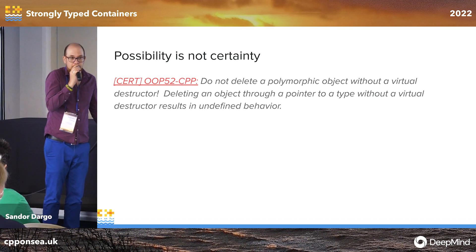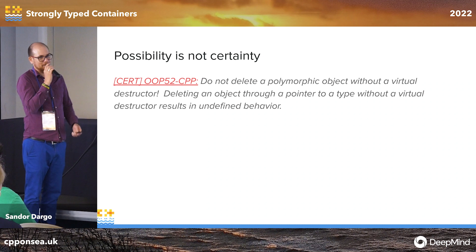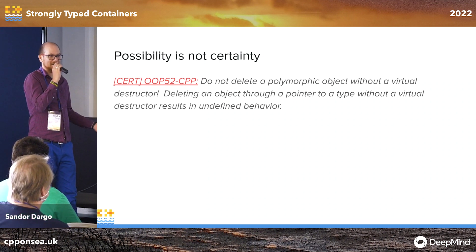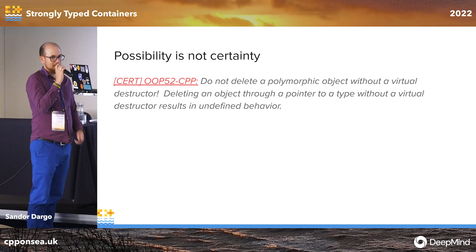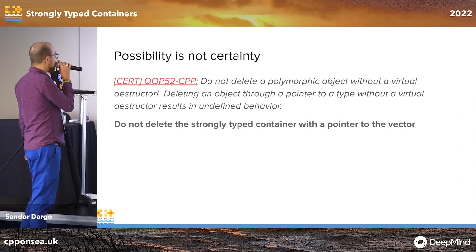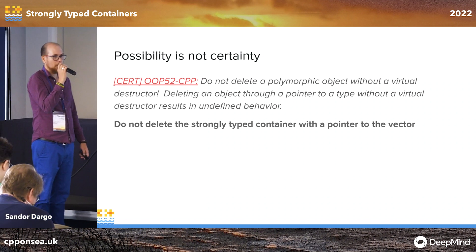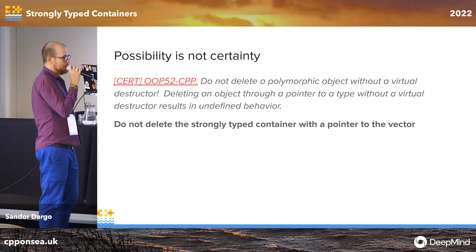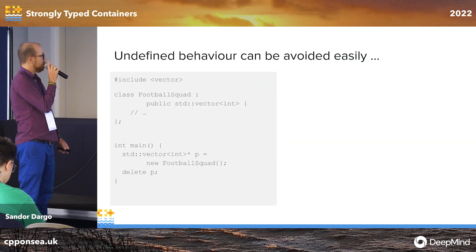When you look around on the internet, you will find heated discussions on this topic. Often people say, 'if you know what you do, there is no problem.' The thing is you can't always rely on that because, as we saw in the keynote yesterday, an average program lives far longer than a developer stays in their job. You cannot rely on others not doing something nasty with such classes. It could be easily avoided by just not deleting the strongly typed container with a pointer to the vector.